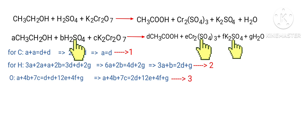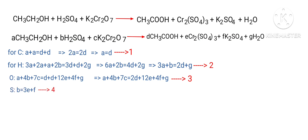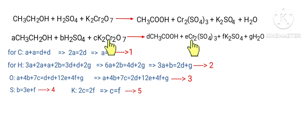For Sulphur: B equals 3E plus F. (Equation 4). For Potassium: 2C equals 2F, so C equals F. (Equation 5). For Chromium: 2C equals 2E, so C equals E. (Equation 6).